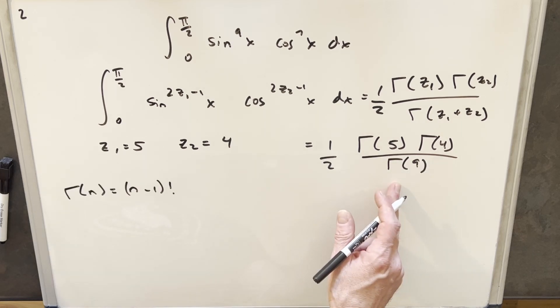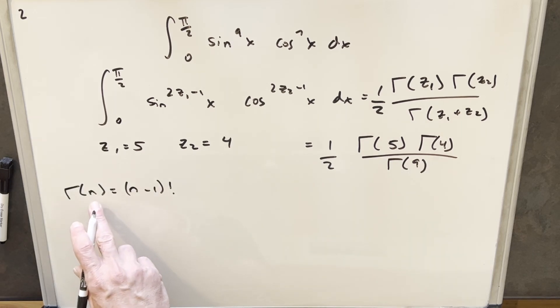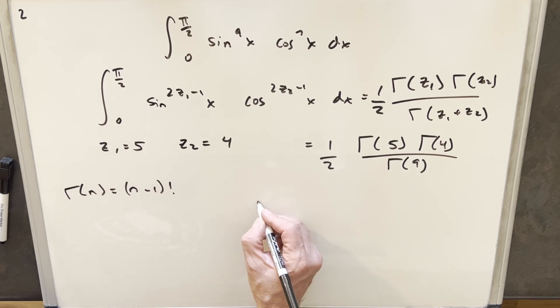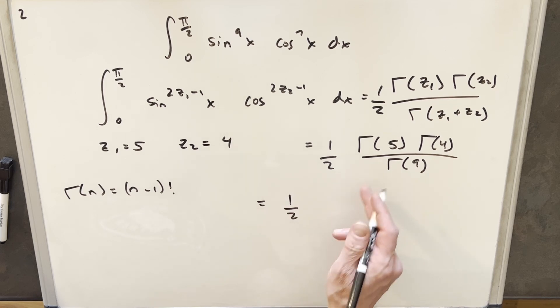What we're going to do to calculate our value for the gamma function is we'll use this formula. For the gamma of n, we're just going to be looking at n minus 1 factorial, so we'll put that to use.